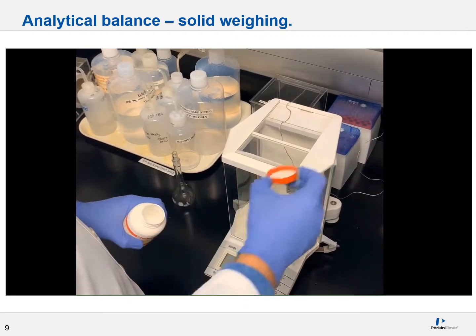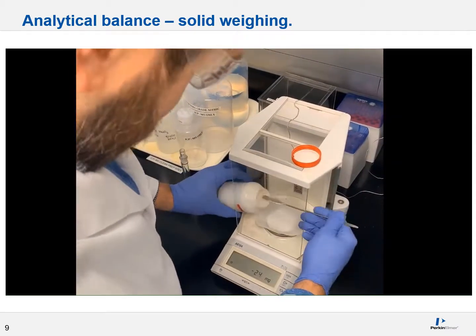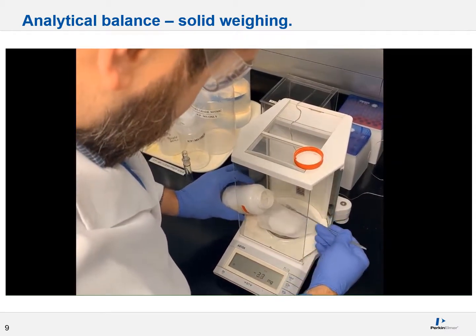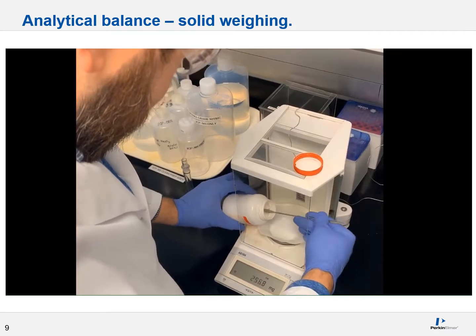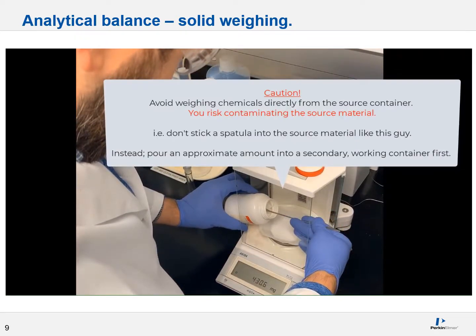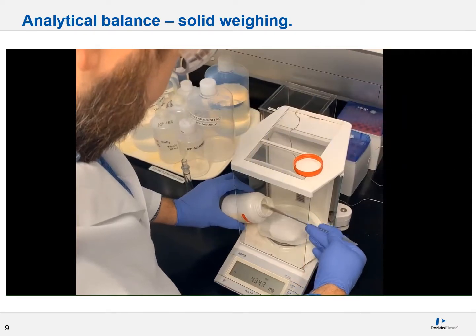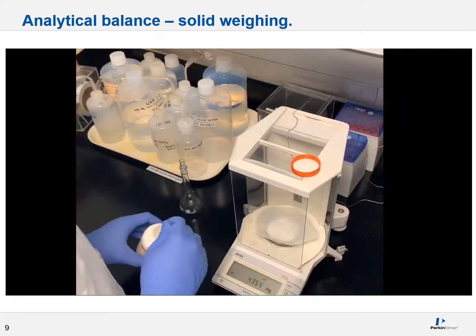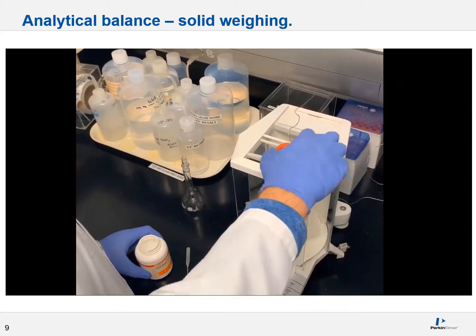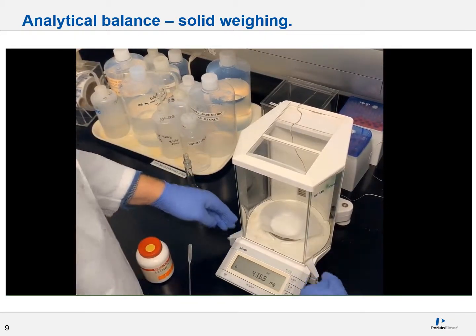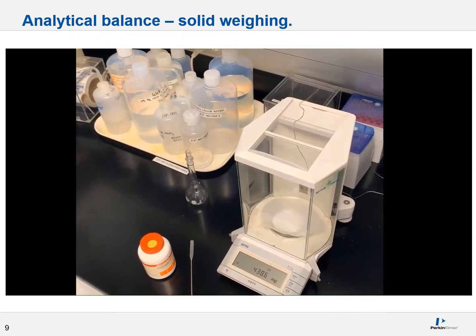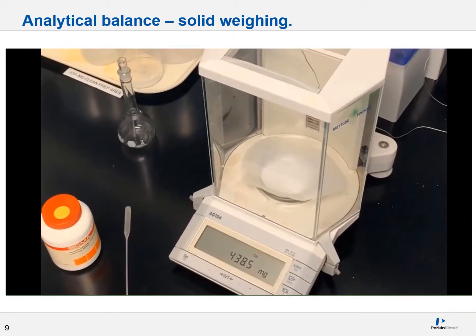And add a desired salt or chemical with the help of a spatula or equivalent scooping device. Be sure to give the balance enough time to adjust. It takes a moment for the weight to stabilize. If you overshoot a target weight, simply take the excess chemical or salt from the weigh boat and discard it. Never add it back to the original container. It's now considered contaminated. There you go. Close the sides of the balance and wait for the CAL button to appear. This means the balance is stable.